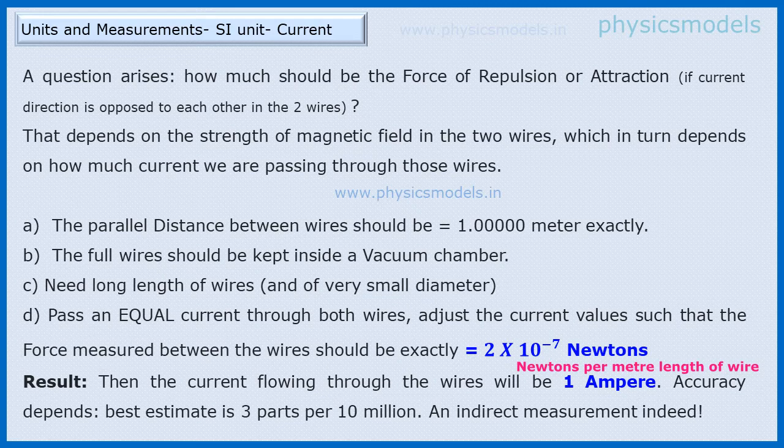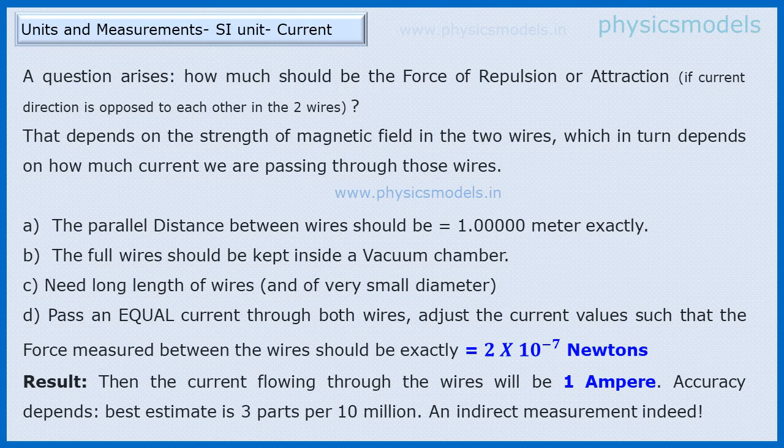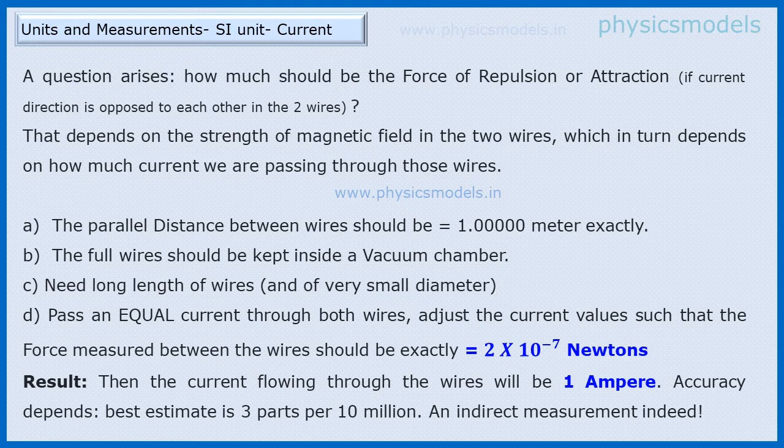A very indirect way of measuring current. This force to current relationship is because force depends on the strength of the magnetic field. The strength of the magnetic field depends upon how much current is flowing in the wires, so therefore this was accurate to the extent of three parts per 10 million.